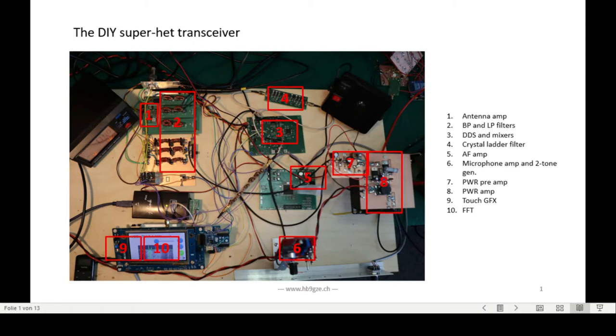My transceiver is using input filters, the bandpass filters. It is using an output filter, lowpass filters. We are using a crystal filter, and another bandpass filter to filter the intermediate frequency to the fast Fourier transformation of the display.